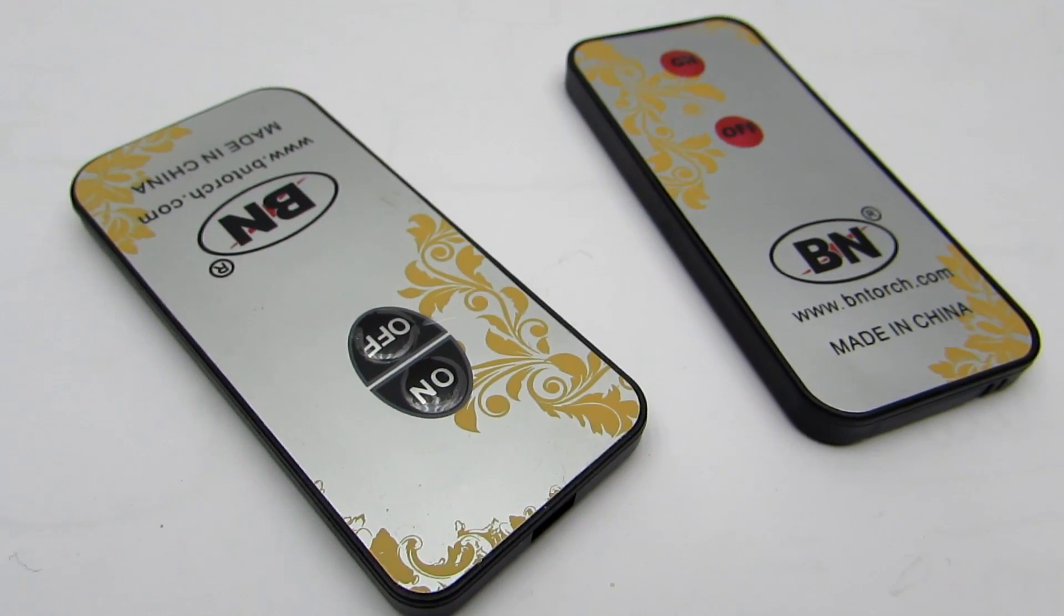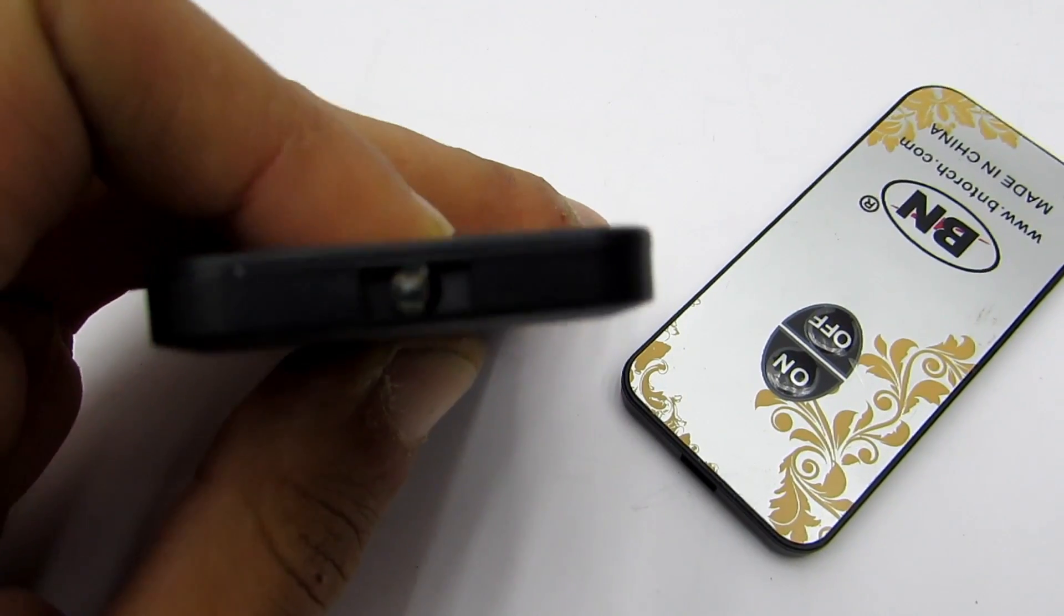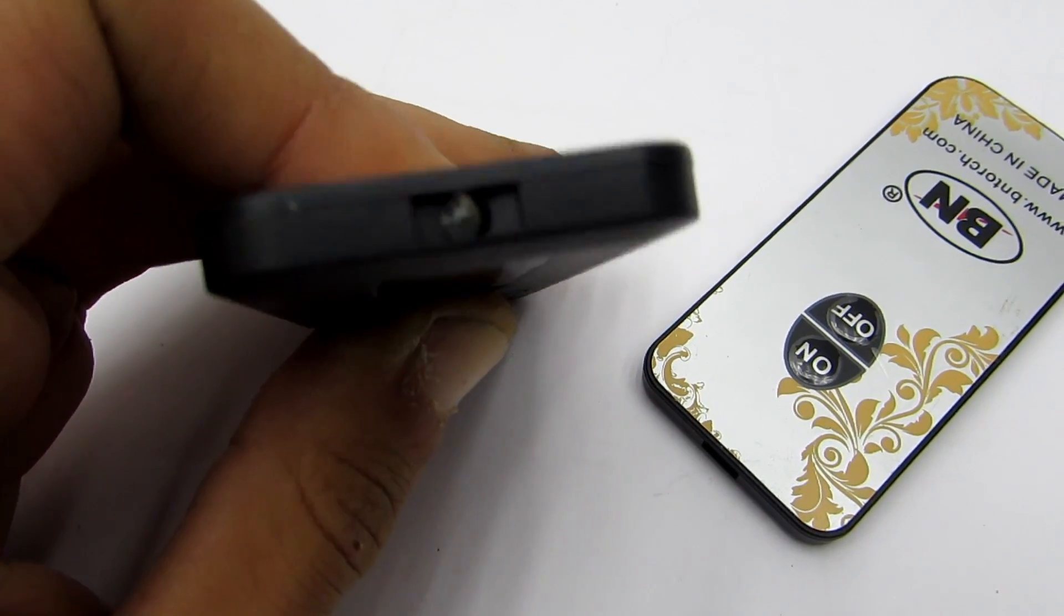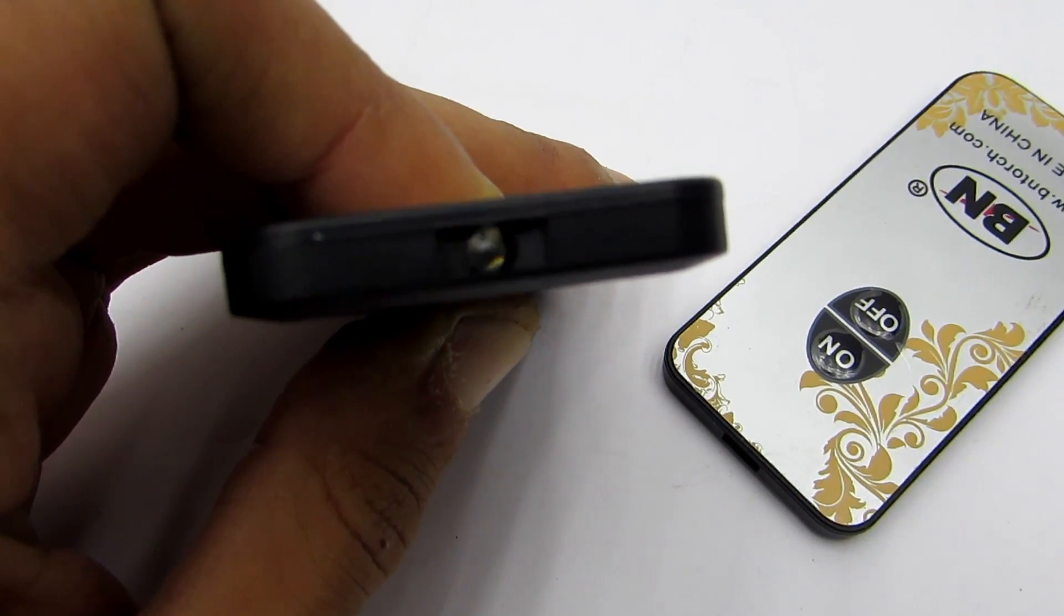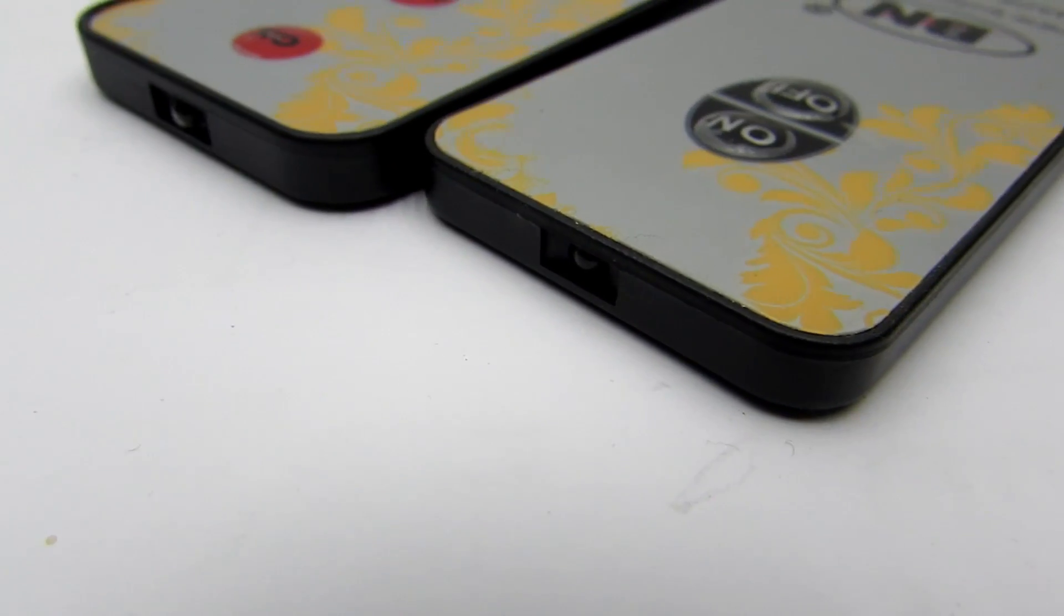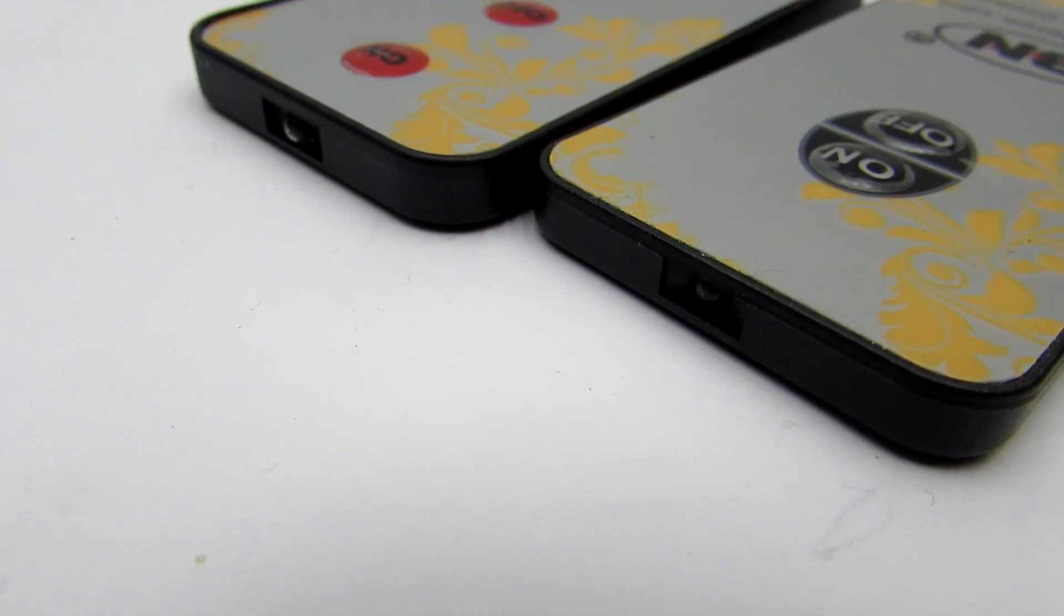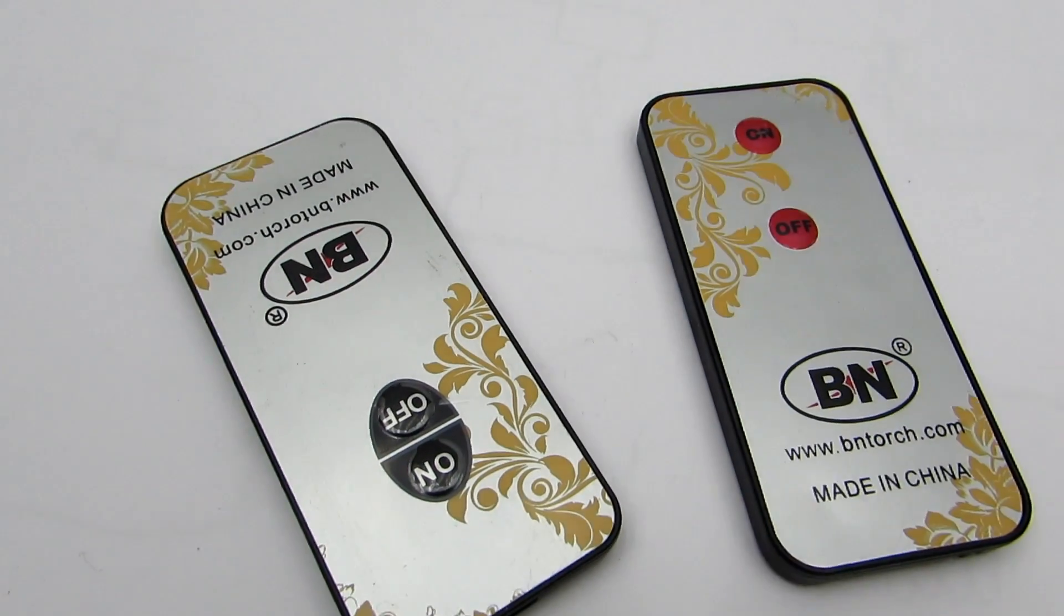Any remote control works on a specific fixed frequency called the carrier. Typically this frequency can be from 36 to 40 kilohertz, with possible rare exceptions depending on the manufacturer.